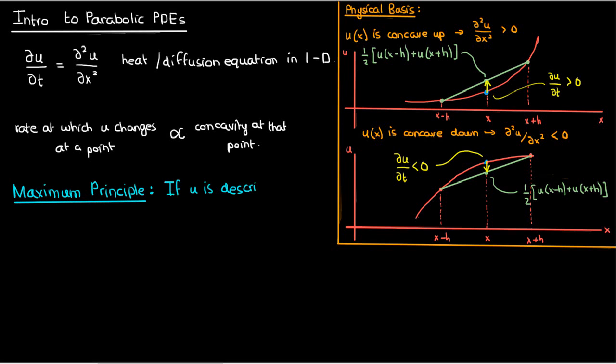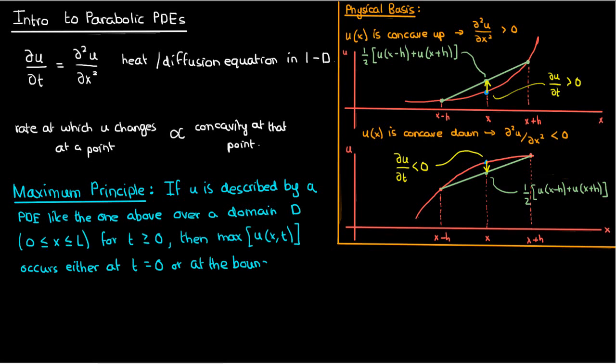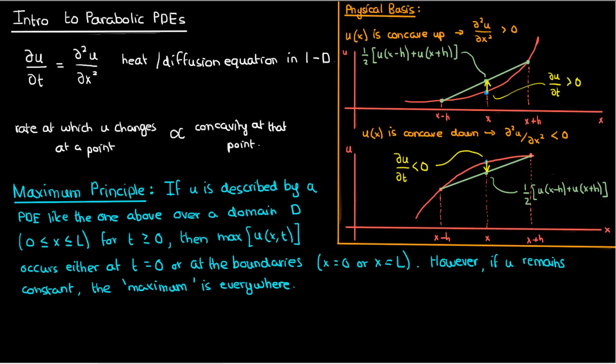This theorem states that if u is described by the parabolic PDE given above in a domain d from 0 to L, then its maximum value occurs either at the start or somewhere at the boundaries. The maximum value cannot occur anywhere in the interior of the domain after t equals 0. The only exception to this is if u remains constant everywhere.